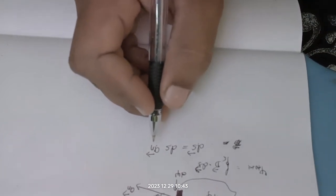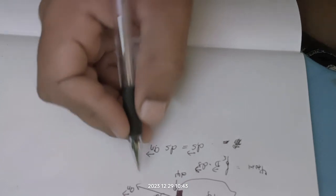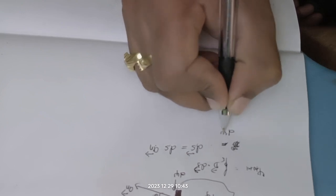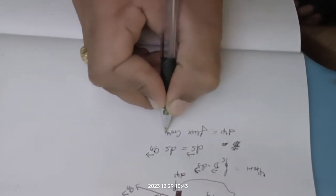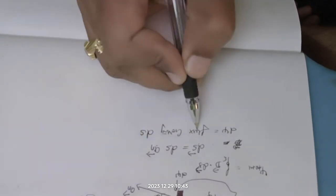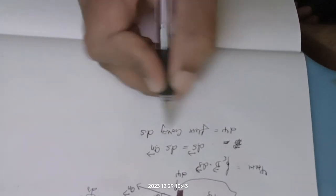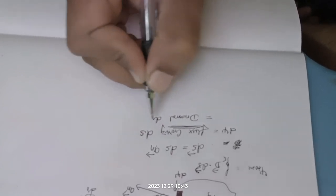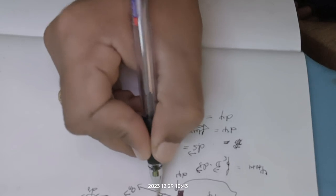Similarly, the electric flux d-psi can be written as the flux crossing this differential surface. Flux means the total number of electric lines of force passing through the surface. This flux crossing the differential surface can be written as D_normal times dS. Here D_normal is the component of D entering the surface normally, which is what we consider.